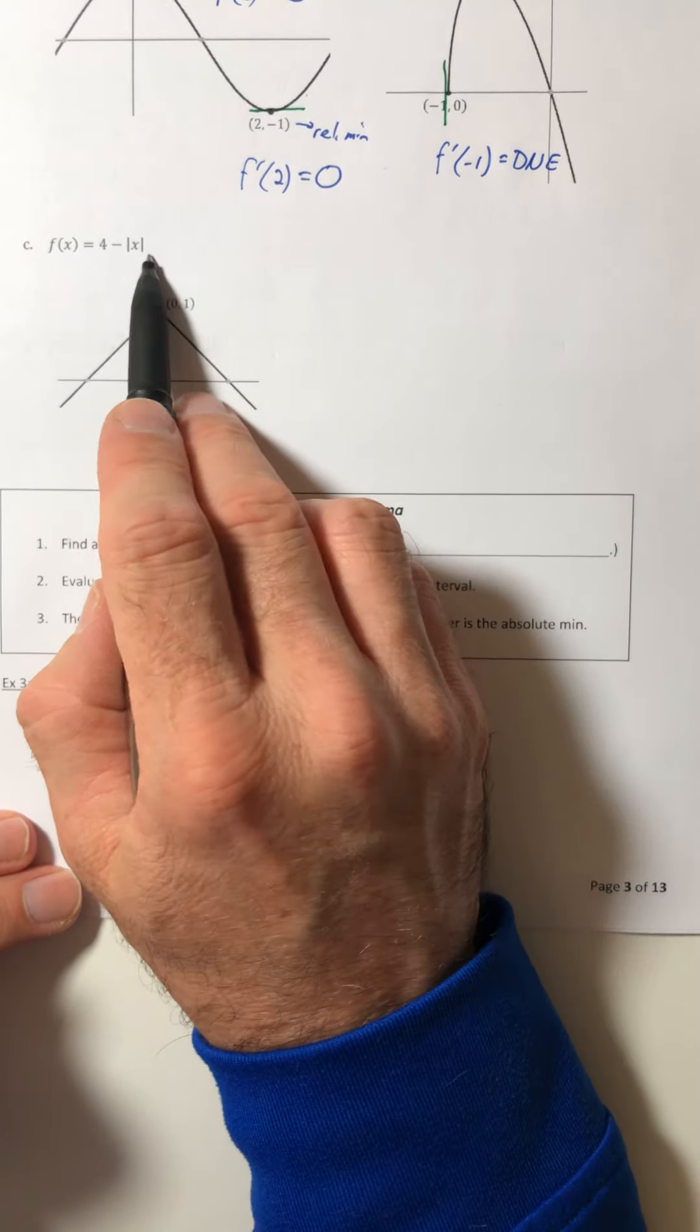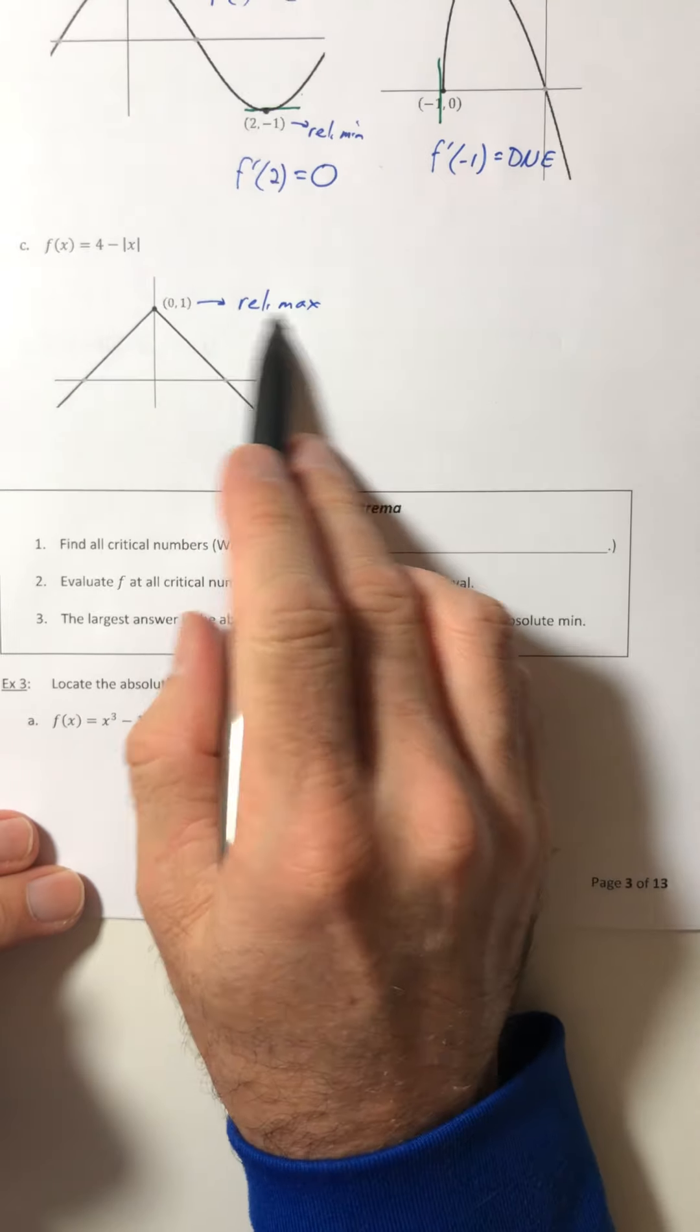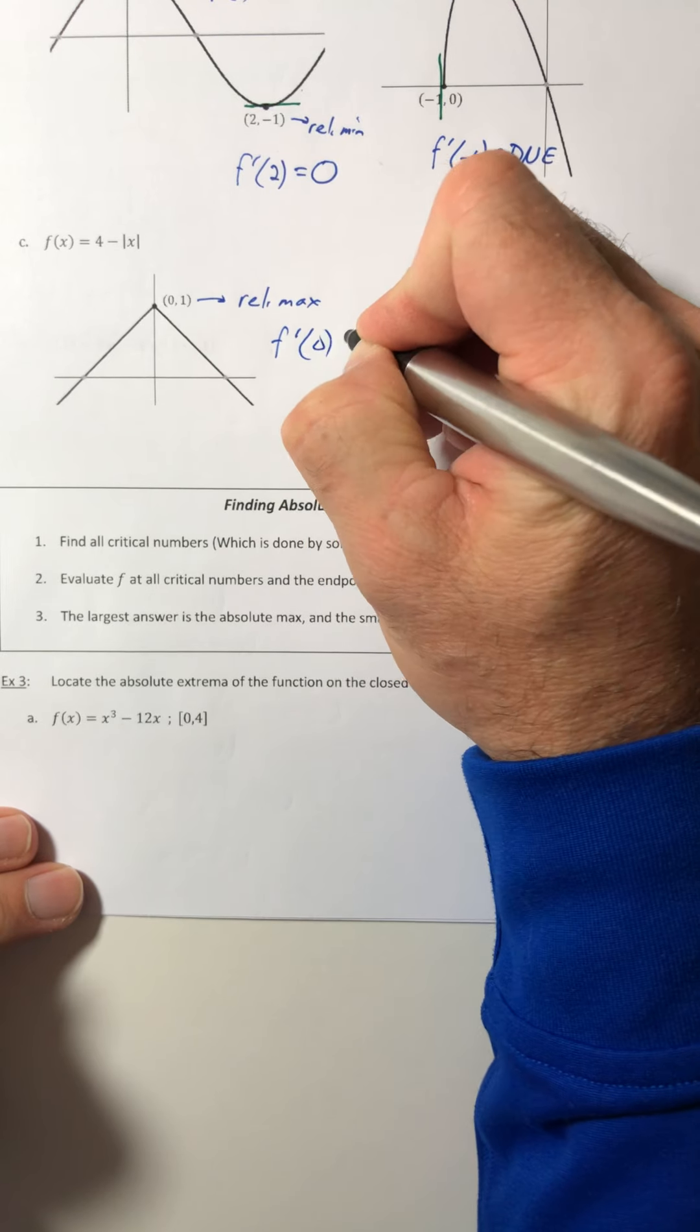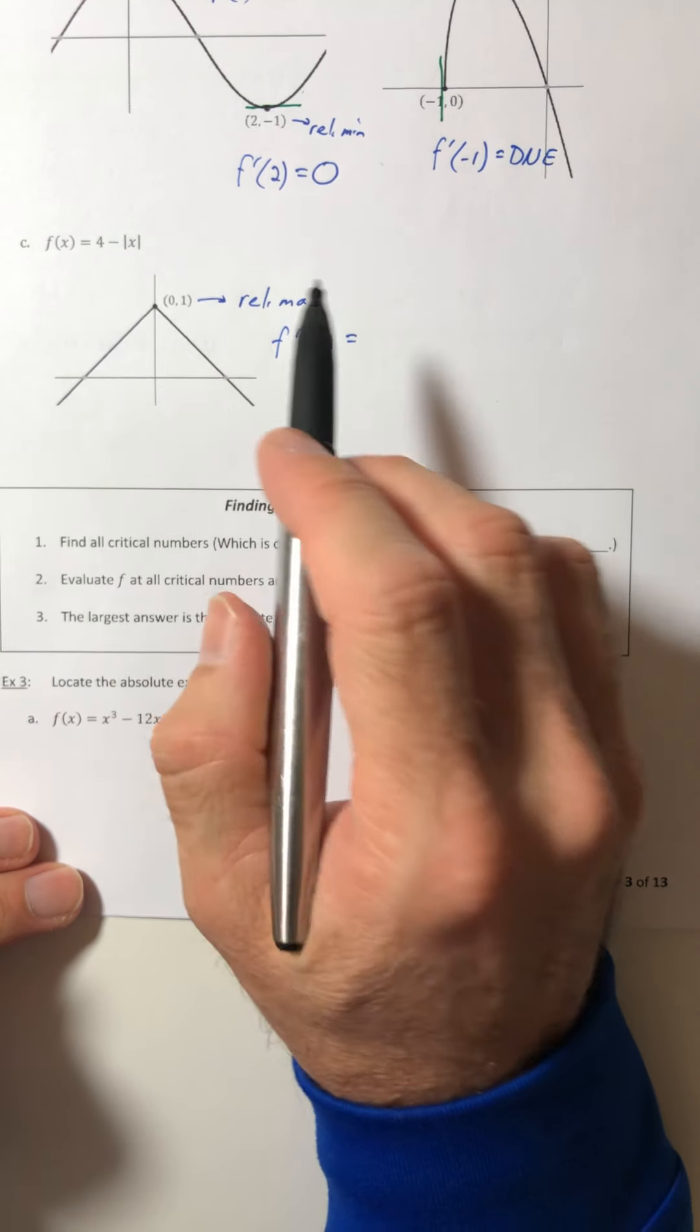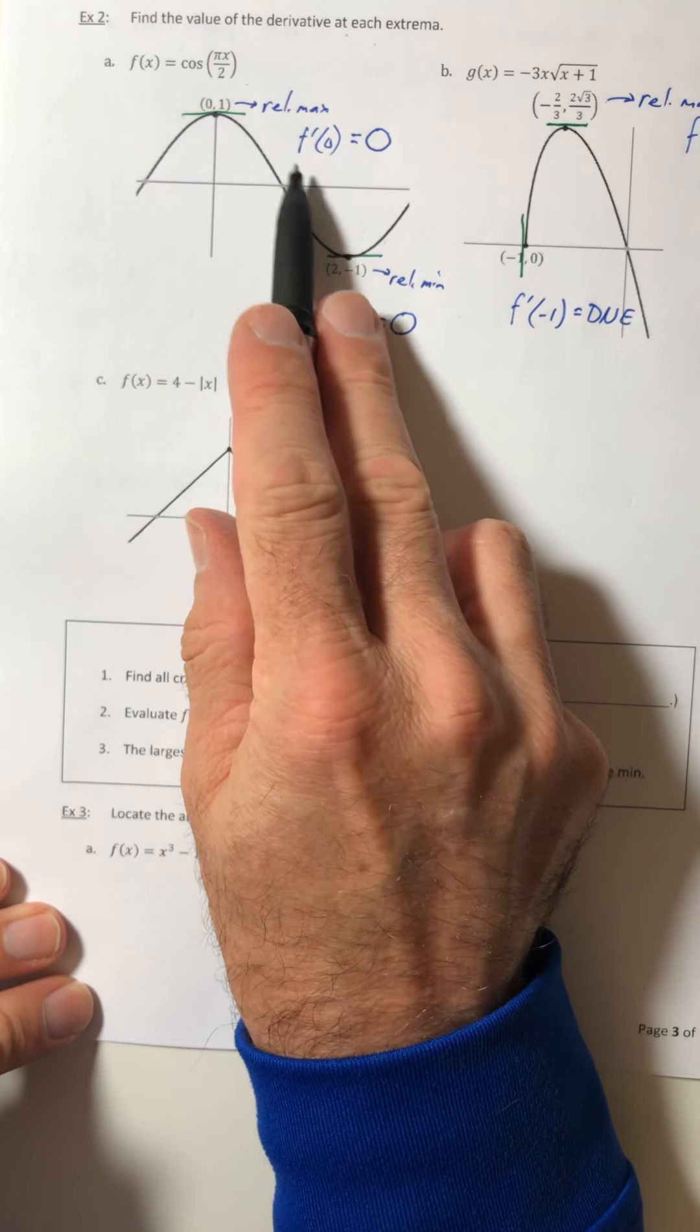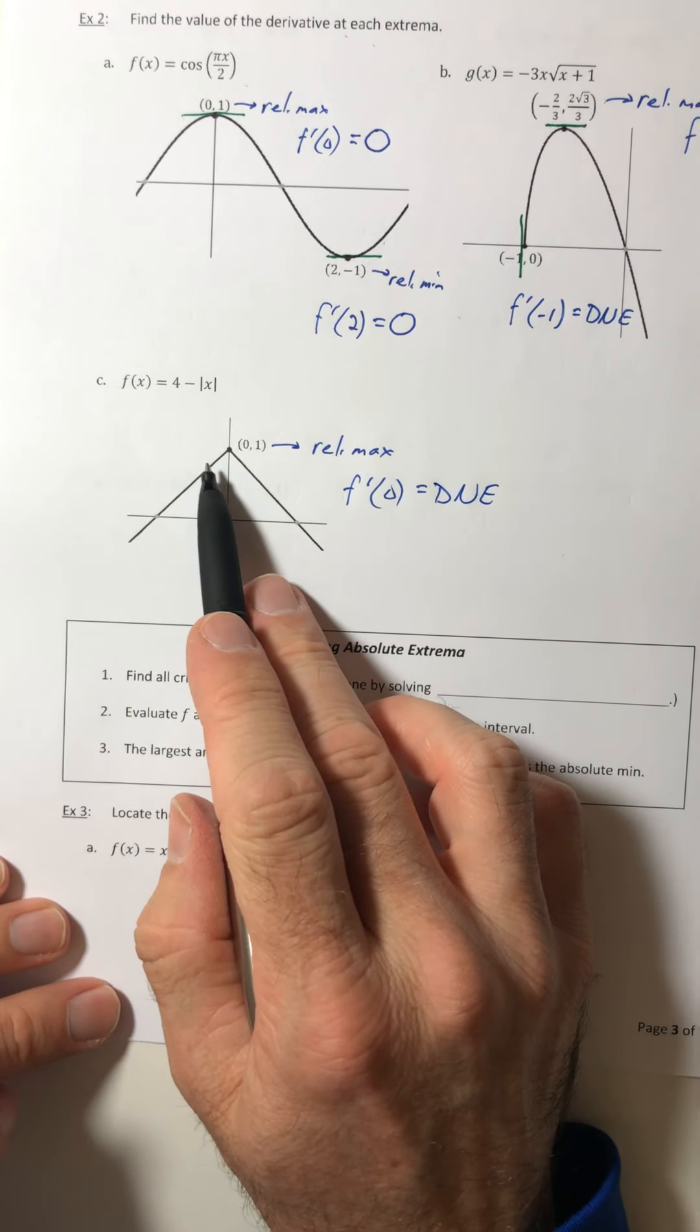Okay, now part C, that's a relative max, but it's a little bit different. We know it's a critical number. However, this is a sharp point, and derivatives do not exist on sharp points. So it's a relative max, but this time, instead of the derivative being zero, now the derivative is undefined because it's sharp.